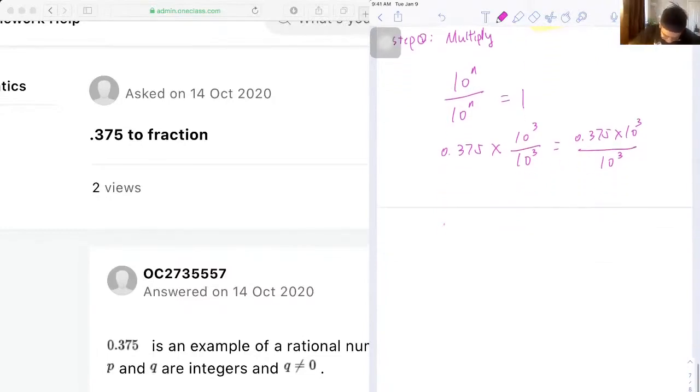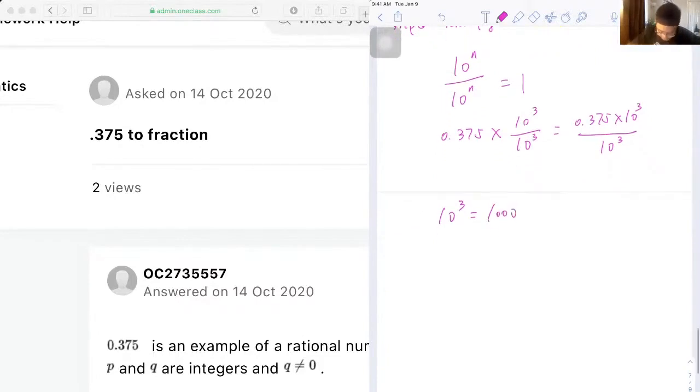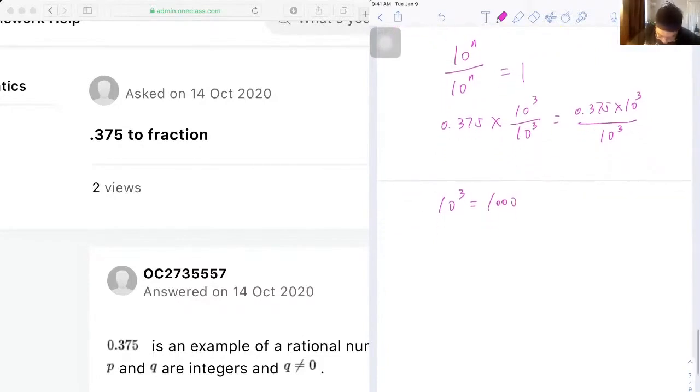Then we will know that 10 to the exponent of 3 is equal to a thousand, right? So in other words, times 10 to the exponent of 3, the decimal point will move to the right for three units. Therefore we get 375 as our numerator and a thousand as our denominator, okay.